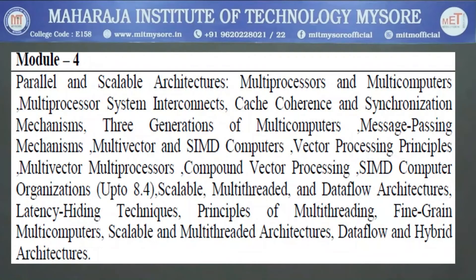Module 4 covers multi-processor and multi-computer architectures, including multi-processor system interconnections. It looks into cache coherence problems and synchronization mechanisms — crucial when maintaining multiple caches. The three generations of multi-computers are examined, along with message passing mechanisms.